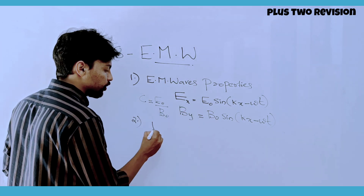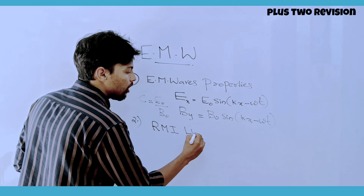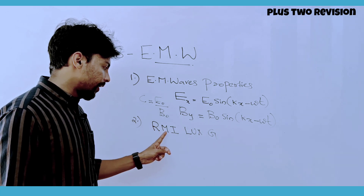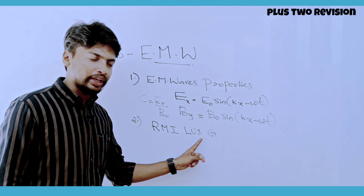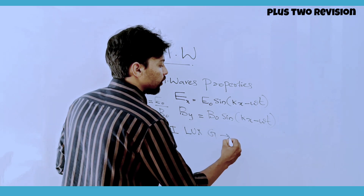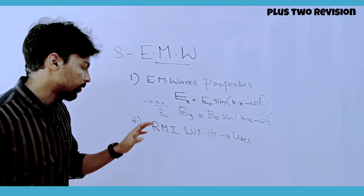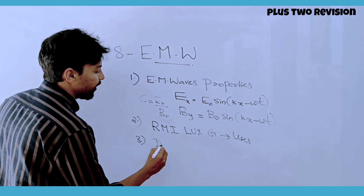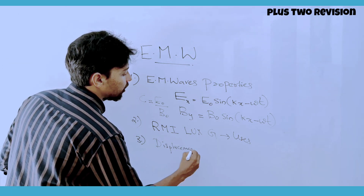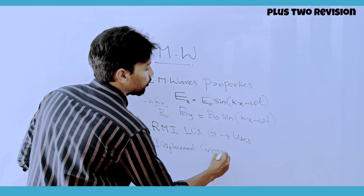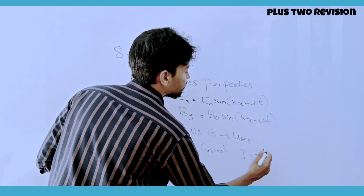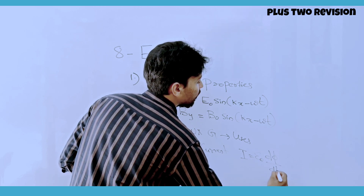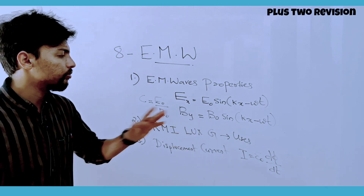This is where we have a displacement current. What is displacement current? The equation is I equal to epsilon-zero times d-phi by dt.